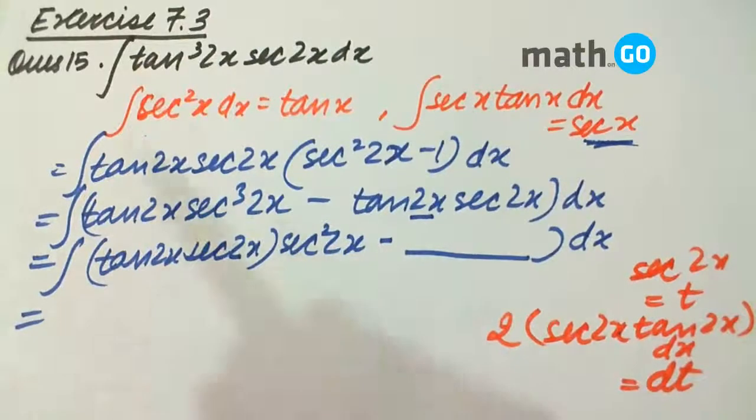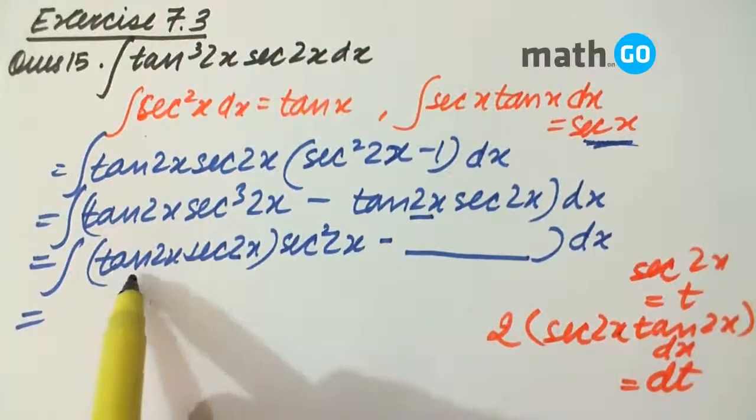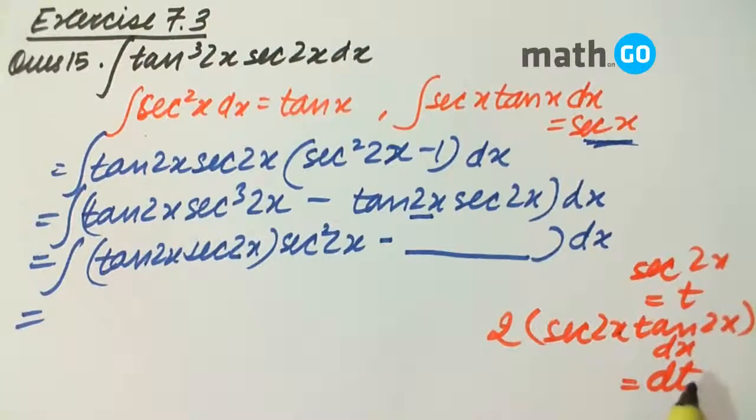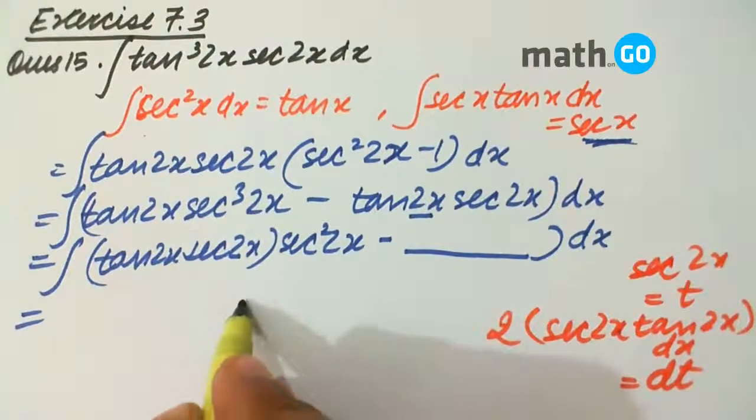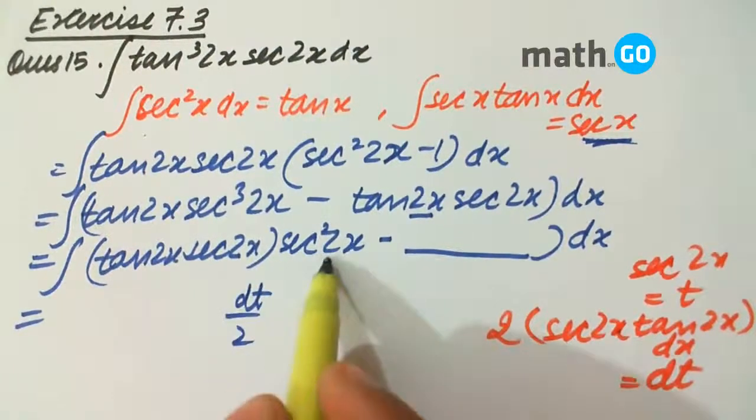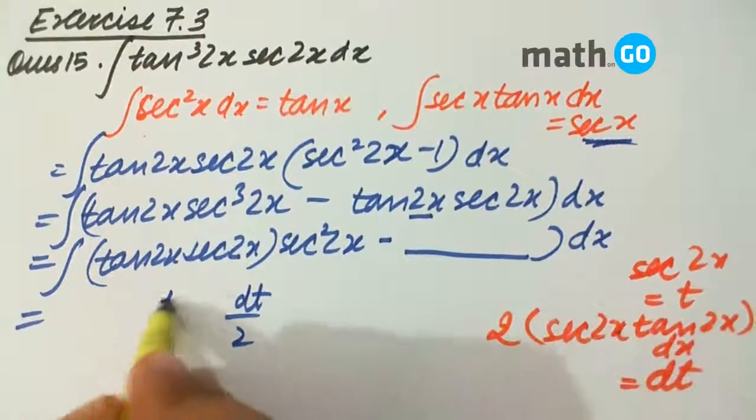So, we are left with tan 2x sec 2x that vanishes with the dx. So, dt by 2 to sec square 2x, that is nothing but t square.